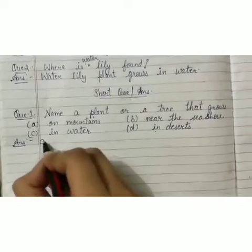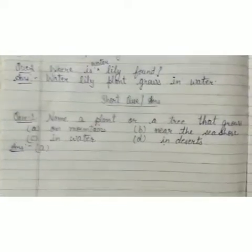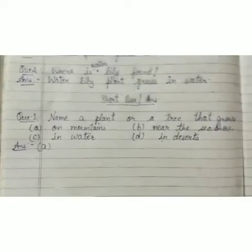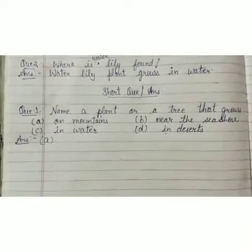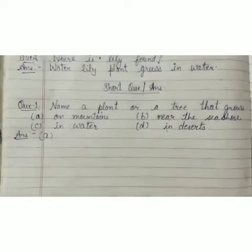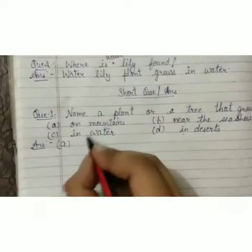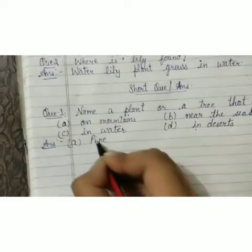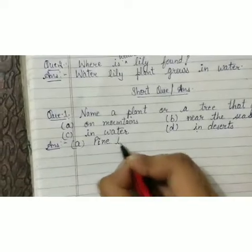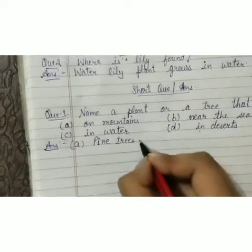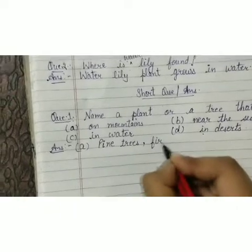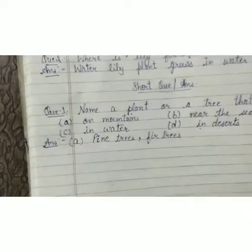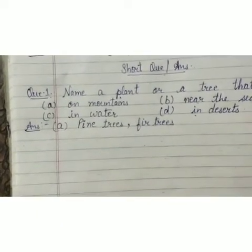Now we are writing the answer. First we will write the answer of A: name a plant or tree that grows on mountains. They are asking for one, but we are writing two — if you forget one, remember the other. Pine trees and fir trees.